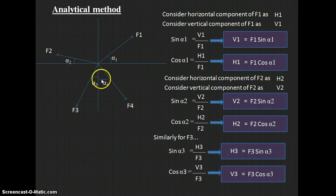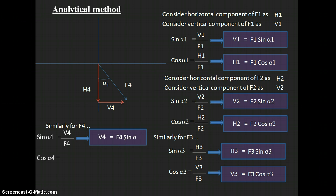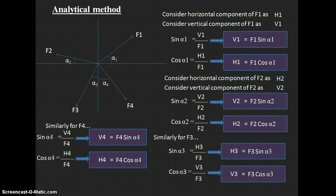For F4, we resolve it into horizontal component H4 and vertical component V4, again constructing a right-angle triangle by shifting H4 to the bottom. Applying sin(α₄) = V4/F4, so V4 = F4·sin(α₄). And cos(α₄) = H4/F4, so H4 = F4·cos(α₄). We have now determined all horizontal and vertical components for all four forces.